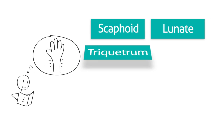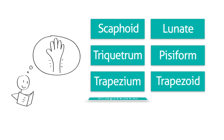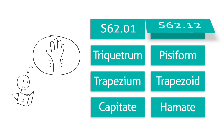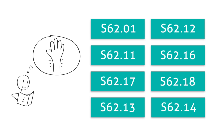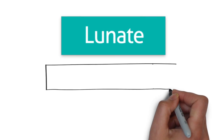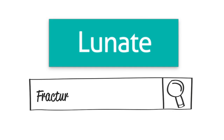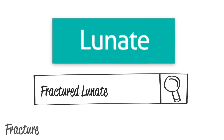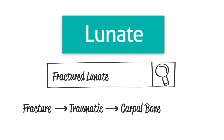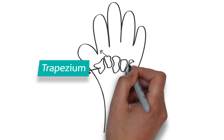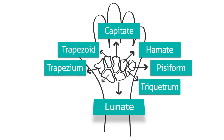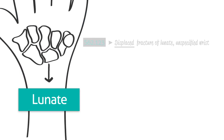First, you will need to know that the wrist is made up of 8 carpal bones. In ICD-10, each bone has a different fracture code. So next, you will need to know what bone was fractured. We'll say the patient fractured the lunate. Try to look up 'fracture lunate' in the ICD-10 alphabetic index and you'll be out of luck. You'll have to go to 'fracture, traumatic, carpal bone, lunate' to find the code.